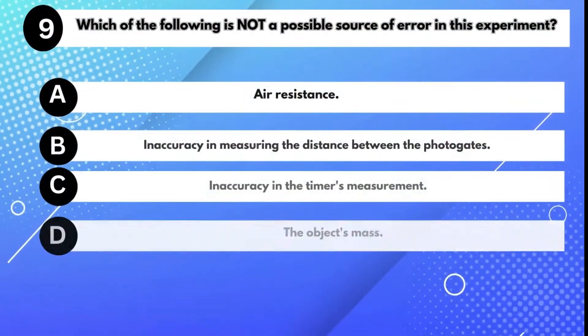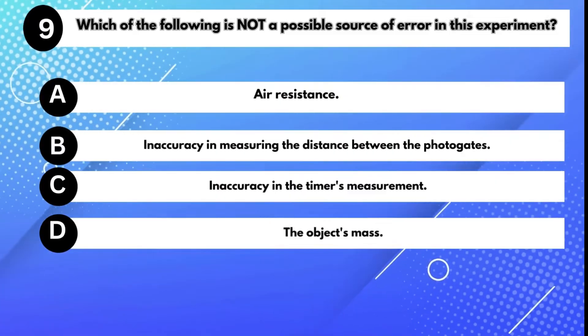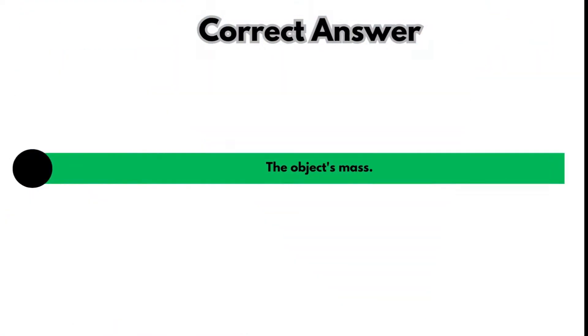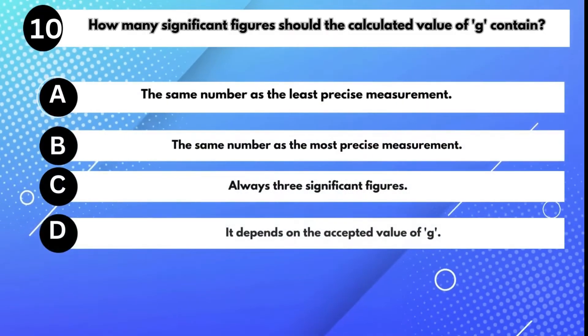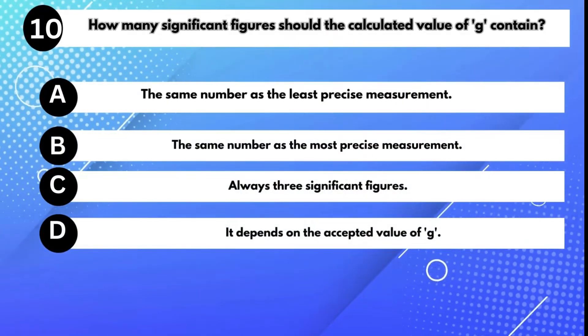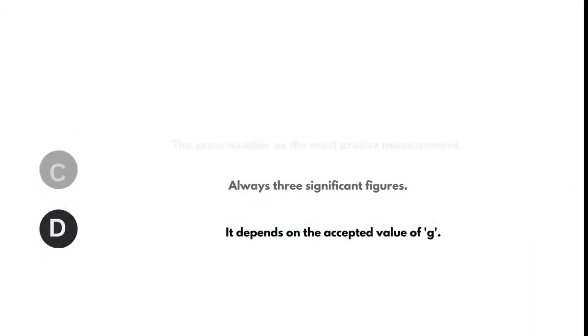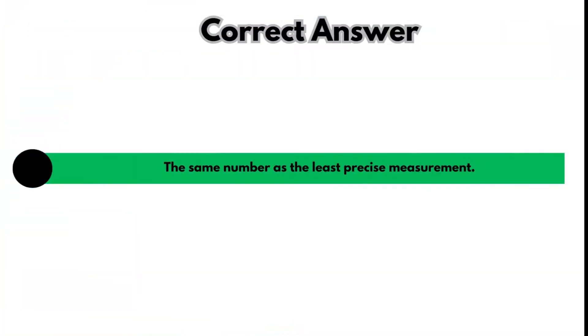Which of the following is not a possible source of error in this experiment? Answer D: The object's mass. How many significant figures should the calculated value of G contain? Answer A: The same number as the least precise measurement.